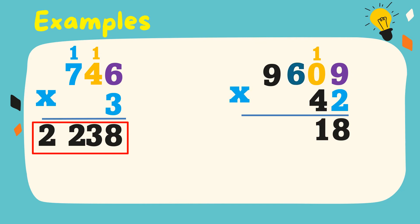2 times 0 is equal to 0, plus 1 is equal to 1. 2 times 6 is equal to 12. Write 2, regroup 1. 2 times 9 is equal to 18, plus 1 is equal to 19.